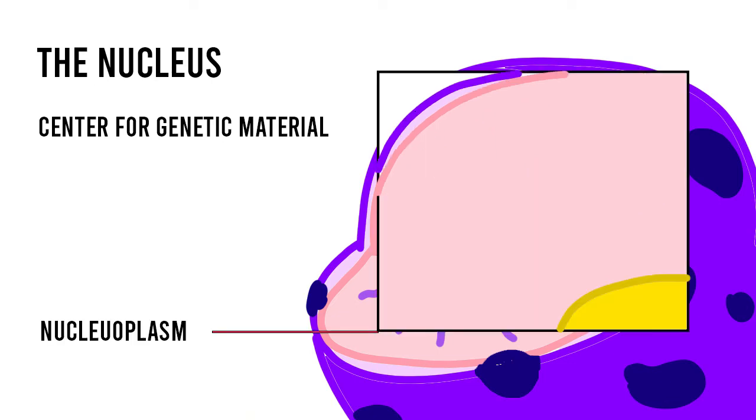The nucleoplasm is a viscous material composed primarily of cytosol which forms the nucleus' matrix and holds several non-membrane-bound substructures within the nucleus in place. The isolated environment of the nucleoplasm allows for controlled transcription and gene regulation to occur.